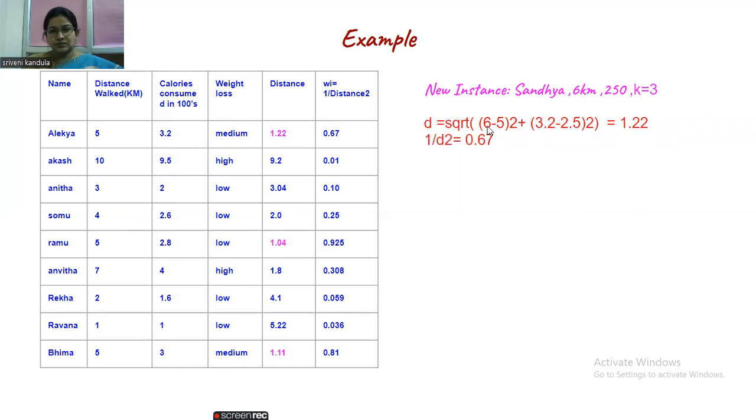Let's calculate the distance. It is square root of (D1-D2)². D1 is 6, D2 is 5, so (6-5)² plus (0.2-2.5)². If you take the square root of that, we are getting a value of 1.22. Now 1 by d² value, so 1/(1.22)² = 0.67. Here I have calculated and tabulated all the values. Rest of the values you can do yourself.